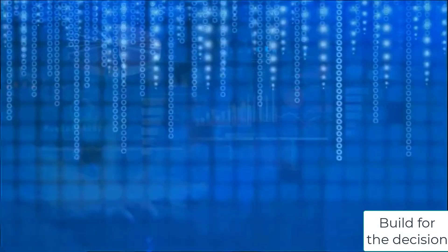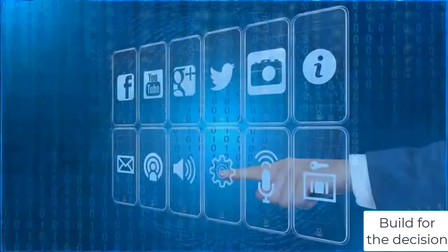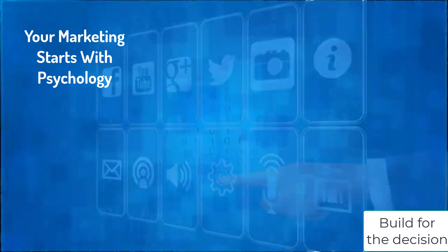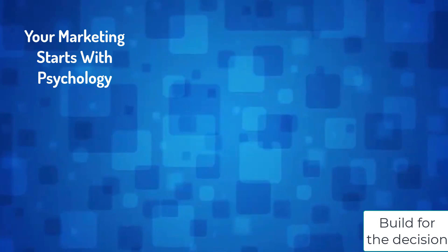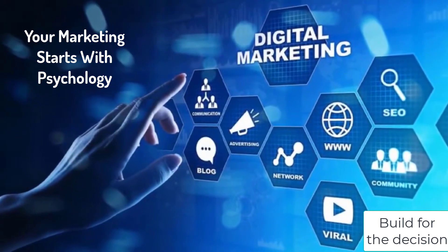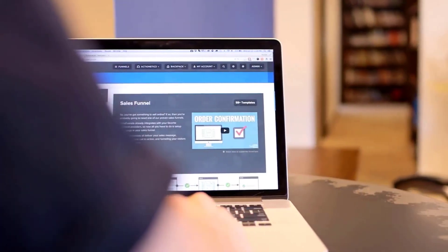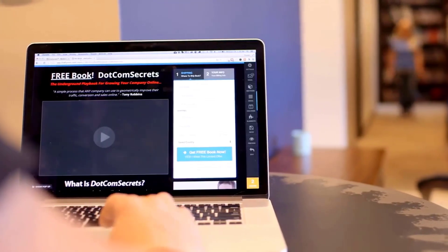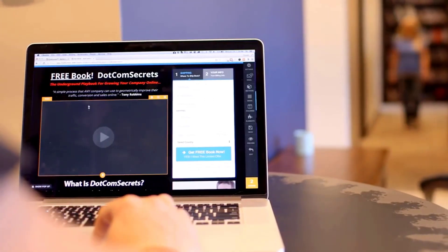Because of this psychology, we must build our online sales plan to take all three brains into account. Your copy, images, and layout must communicate the grunt test in three seconds, then emotionally connect with the potential customer, then logically lay out why your product or service is the best choice.